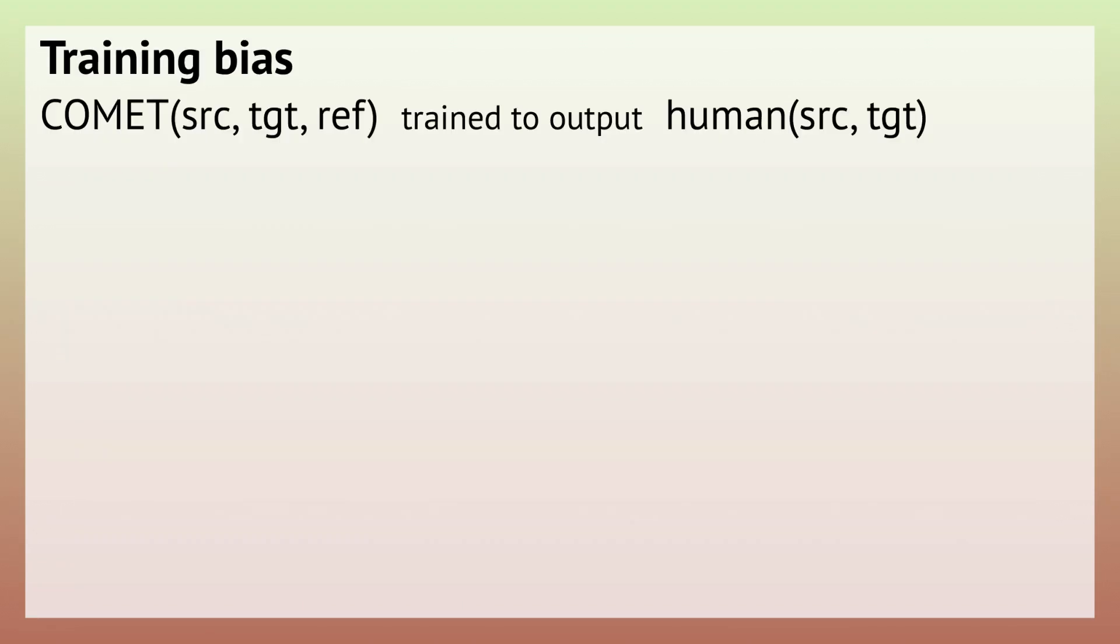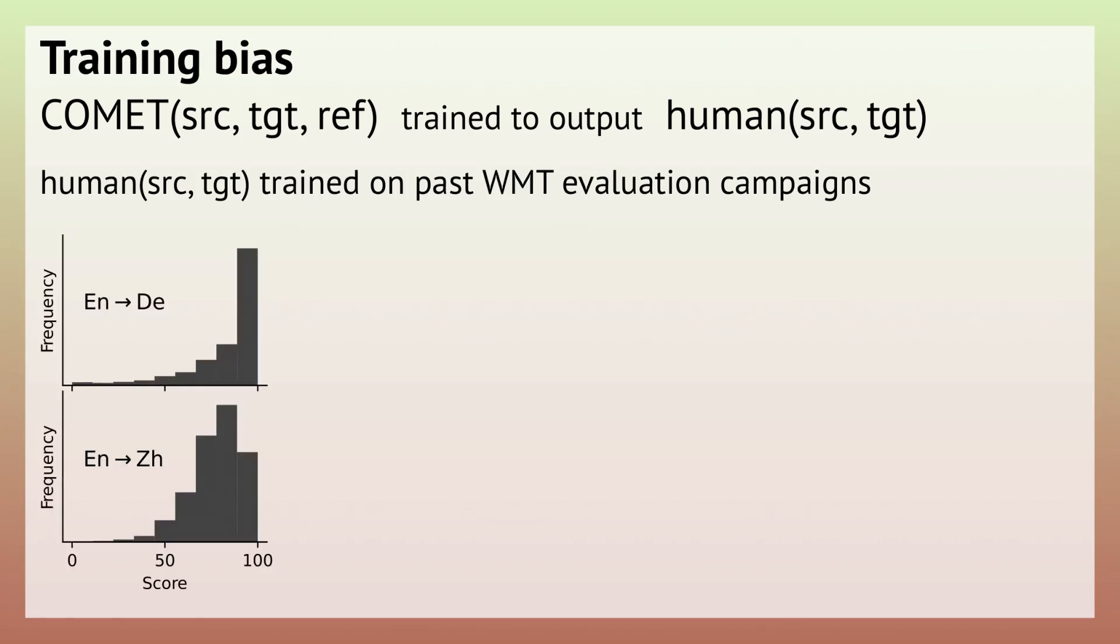Next up, we have training bias. Recall that COMET is trained to emulate the human judgments of translation quality. Here it is important to ask where the training data comes from. Most of it is from past WMT evaluation campaigns. That is problematic, because WMT has been focusing on some languages more than others, so English to German will have on average higher scores than English to Chinese.